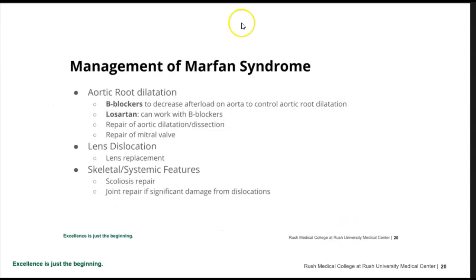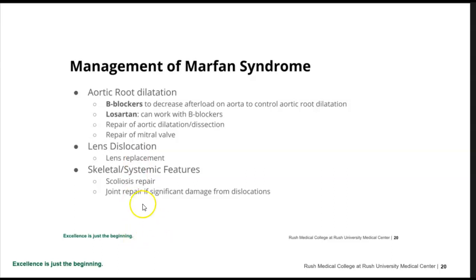Management of Marfan syndrome includes beta blockers to decrease afterload on the aorta and control aortic root dilatation. Losartan also works with beta blockers — they used to think this would be the cure for Marfan syndrome, but it's helpful though it doesn't work as well as hoped. Repair of aortic dilatation or dissection and repair of mitral prolapse when present are key interventions. The aorta usually slowly increases in size, so it's important to monitor by cardiology — an elective repair on a Monday morning with a well-rested cardiovascular surgeon has a much better outcome than an emergency on Saturday night.